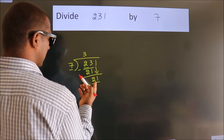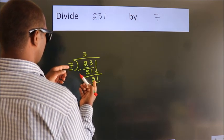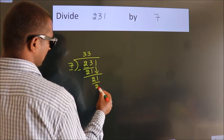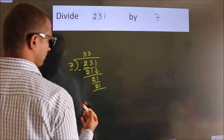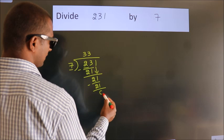When do we get 21? In 7 table, 7 threes, 21. Now we subtract. We get 0.